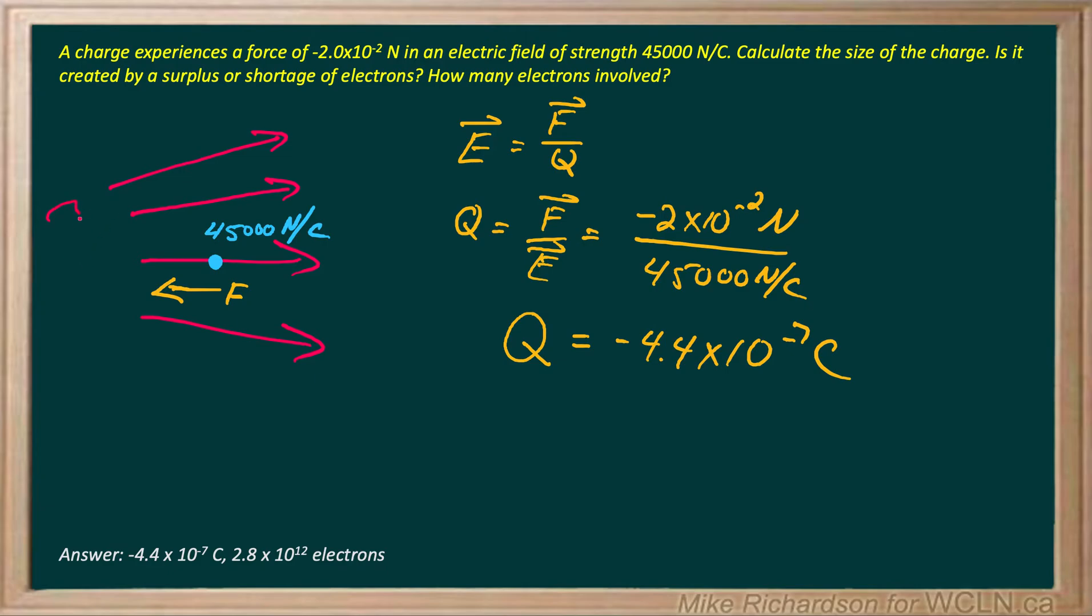So somewhere over here I've got this positive source. I've got to imagine I've got all these positives on this side here, and the field lines are moving away from them. Now if this charge experiences a force to the left, then it must be negative. So it does make sense.